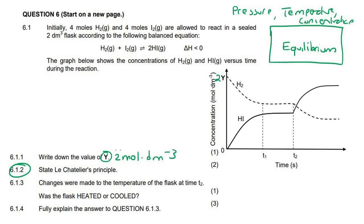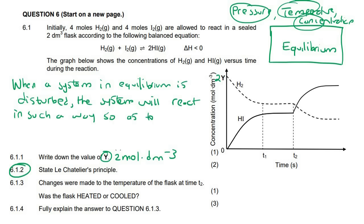If someone increases the concentration of one of the reactants, then the system will try to decrease the concentration of one of the reactants. So when a system in equilibrium is disturbed, what does disturbed mean? Disturbed means that someone changes something. Either they change the pressure, the temperature or the concentration. So when a system that is in equilibrium is disturbed, the system will react in such a way so as to oppose the change. What does oppose mean? It means go against. So if someone increases the pressure, the system will try to decrease the pressure. If someone increases the temperature, the system will try to decrease the temperature. If someone decreases the concentration of one of the substances, then the system will try to increase the concentration of that substance and reaches a new equilibrium.